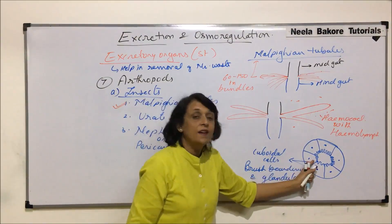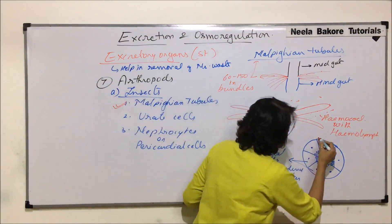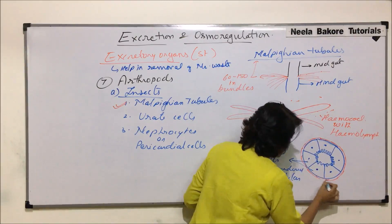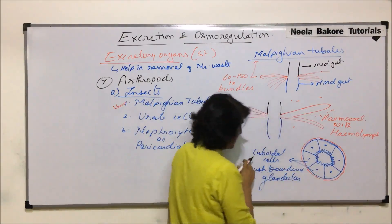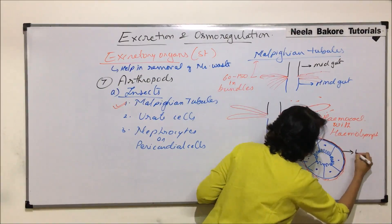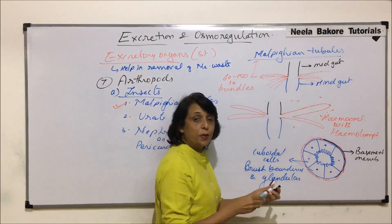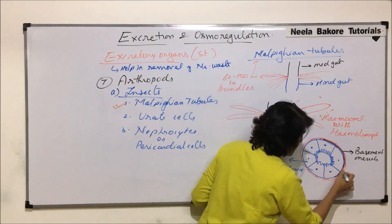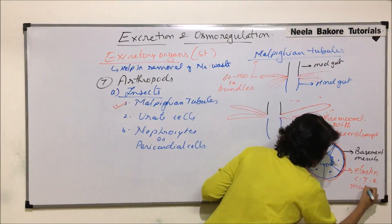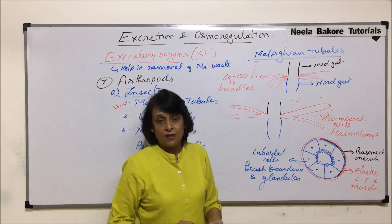The brush border provides finger-like structures so that absorption can be enhanced. Outside the cell layer there is elastic connective tissue (elastin) and muscular tissue. The cuboidal cell layer rests on a basement membrane. Outside the basement membrane is the elastin connective tissue and muscle layer. Because of this elastin connective tissue and muscle, these tubules show a little bit of peristalsis.